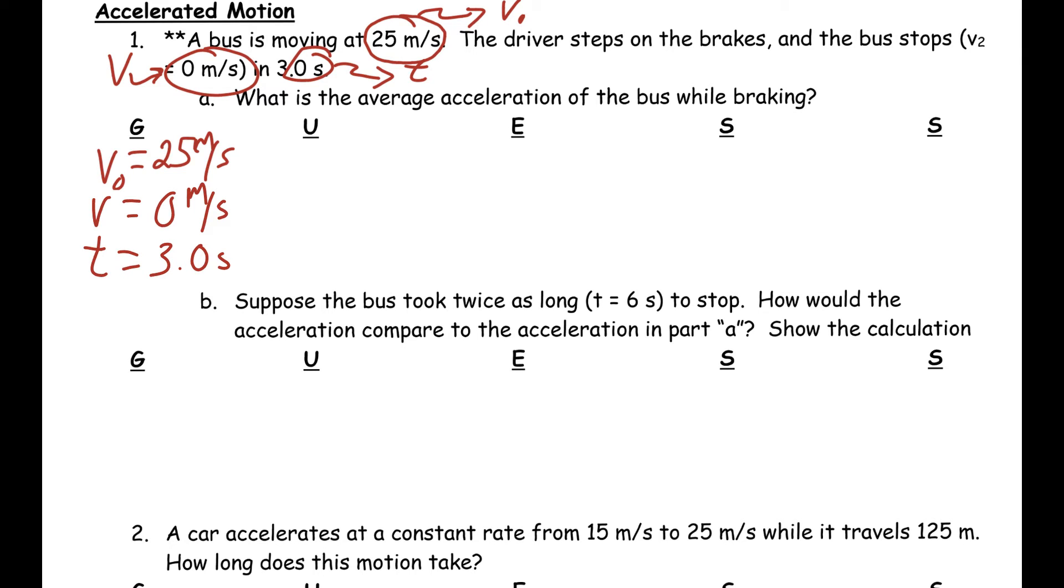Now, that brings us to our unknown. Our unknown, it says, what is the average acceleration? So, acceleration then becomes our unknown. So, now we've got to find a formula that has A, T, V, and V₀. Well, the formula that has all of that is the one that I showed you at the beginning. And that's the second formula, V equals V₀ plus A times T.